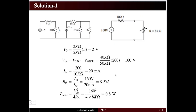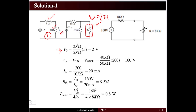To apply Thevenin's theorem, remove R with an open circuit and determine the open circuit voltage, which is the Thevenin voltage. For the first loop, find Vₓ using the voltage division rule: 3 kΩ and 2 kΩ are in series, so Vₓ equals 2 kΩ divided by (2 + 3) kΩ, multiplied by the source voltage of 5 V, giving Vₓ = 2 V.